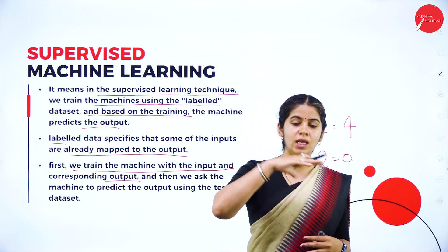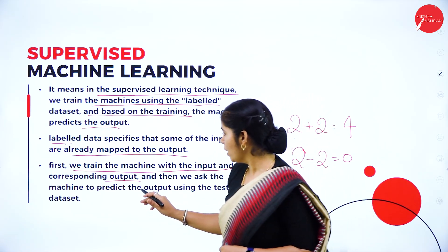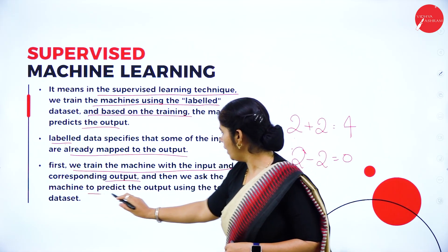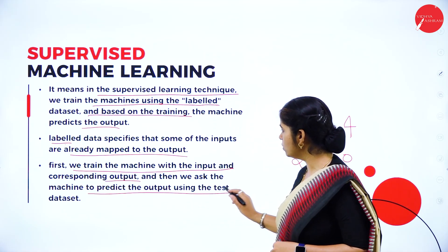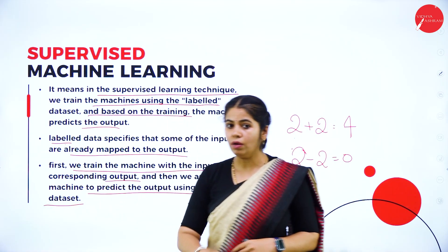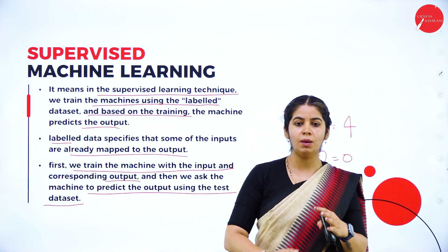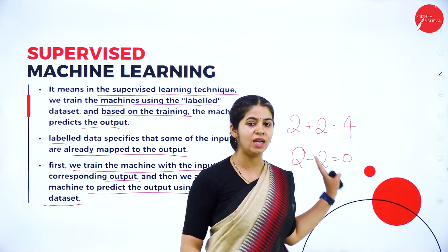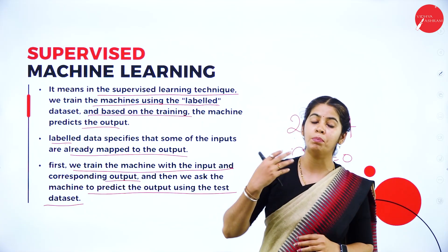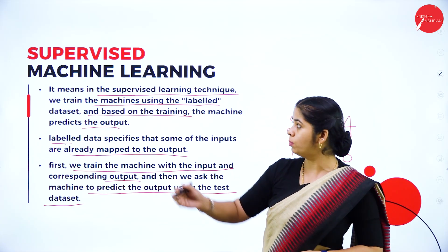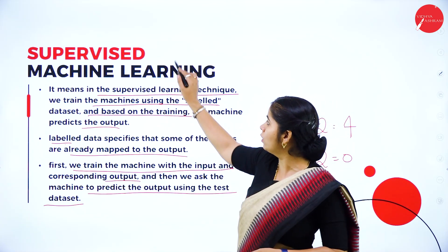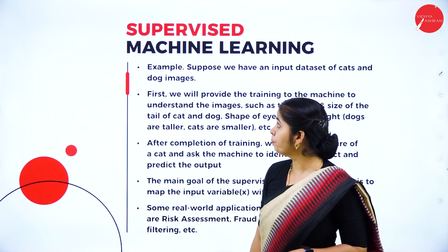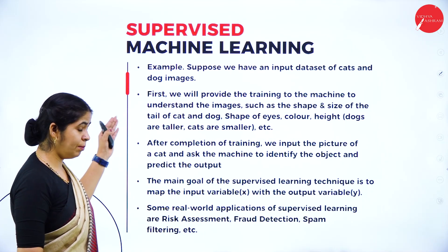Once we train the machine, depending on that training it can make a decision. Then we ask the machine to predict the output using test data. Once we give some other data, depending on whatever training we have provided, it can predict the output. That is what we are going to do in supervised learning.